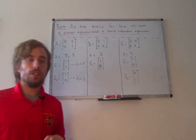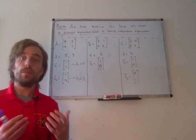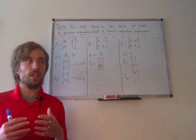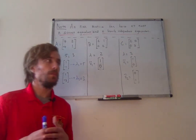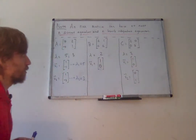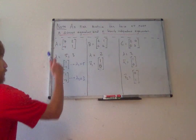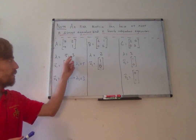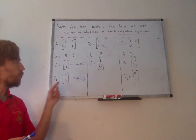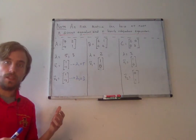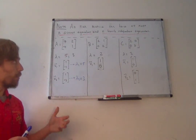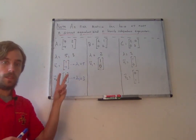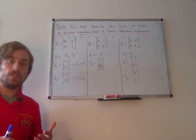I want to look at three examples of different eigenvalue-eigenvector combinations we might see when looking at n by n matrices. Two by two matrices give us a wide enough range of examples. Matrix A has two distinct eigenvalues, and because each eigenvalue is distinct, each one should have at least one linearly independent eigenvector associated with it. This matrix has at most two distinct eigenvalues and two linearly independent eigenvectors — one associated with each eigenvalue.